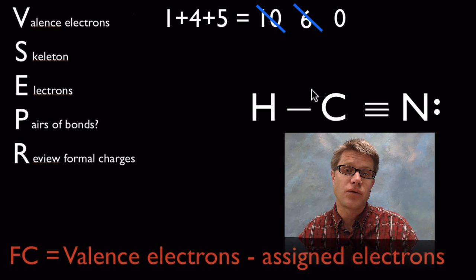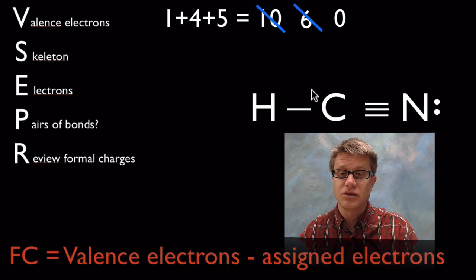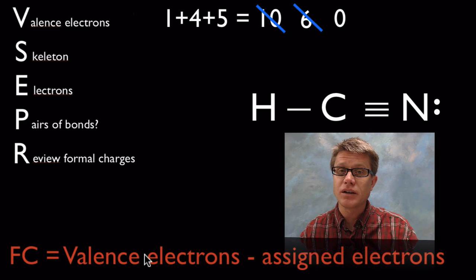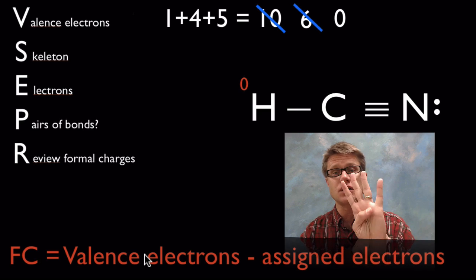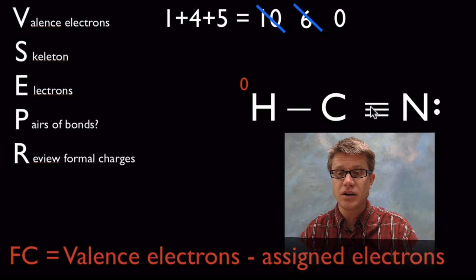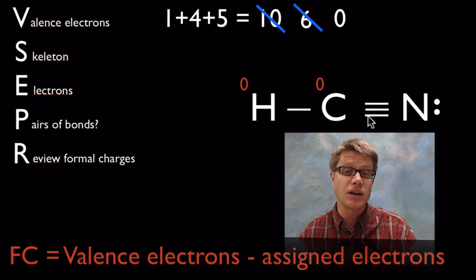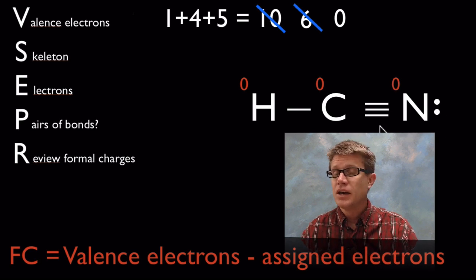The last step is to review the formal charges. Going left to right: hydrogen has one valence electron and has been assigned one, so its formal charge is zero. Carbon has four valence electrons and is sharing four — one here, one here, one here, one here — so its formal charge is also zero. Nitrogen has five valence electrons, has two just to itself and is sharing three, so its formal charge is zero. Formal charges of zero across the board means we've got a pretty good model.